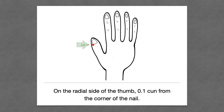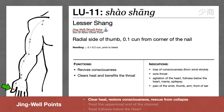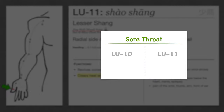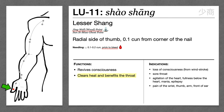Lastly, Lung 11 is on the radial side of the thumb, 0.1 cun from the corner of the nail. Lung 11 is the Jing well point of the lung channel. Jing well points are superficial and have a quick effect, so they're able to restore consciousness for loss of consciousness due to wind stroke. Jing well points quickly clear excess and treat the upper end of the channel, so Lung 11 also benefits the throat. Lung 10 can be used for both excess heat and deficiency heat, whereas Lung 11 is used for severe conditions due to excess heat or even fire toxicity. Classically, Lung 11 was indicated for childhood throat moth, which corresponds more or less to modern tonsillitis — for such severe conditions we would usually prick to bleed Lung 11.